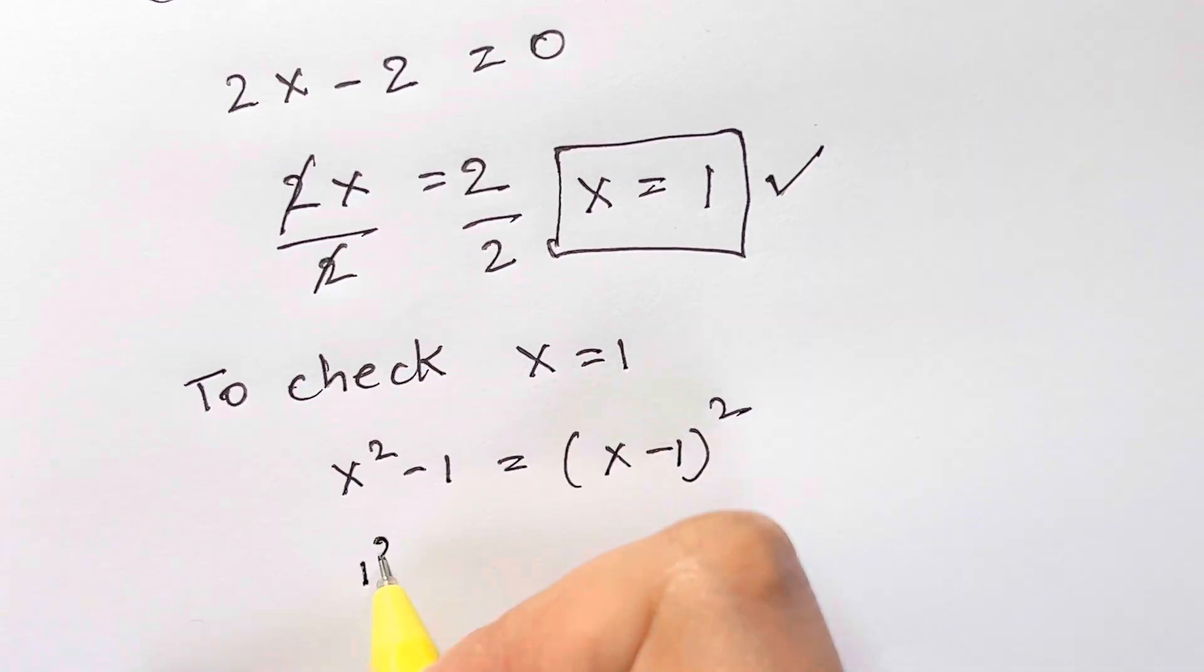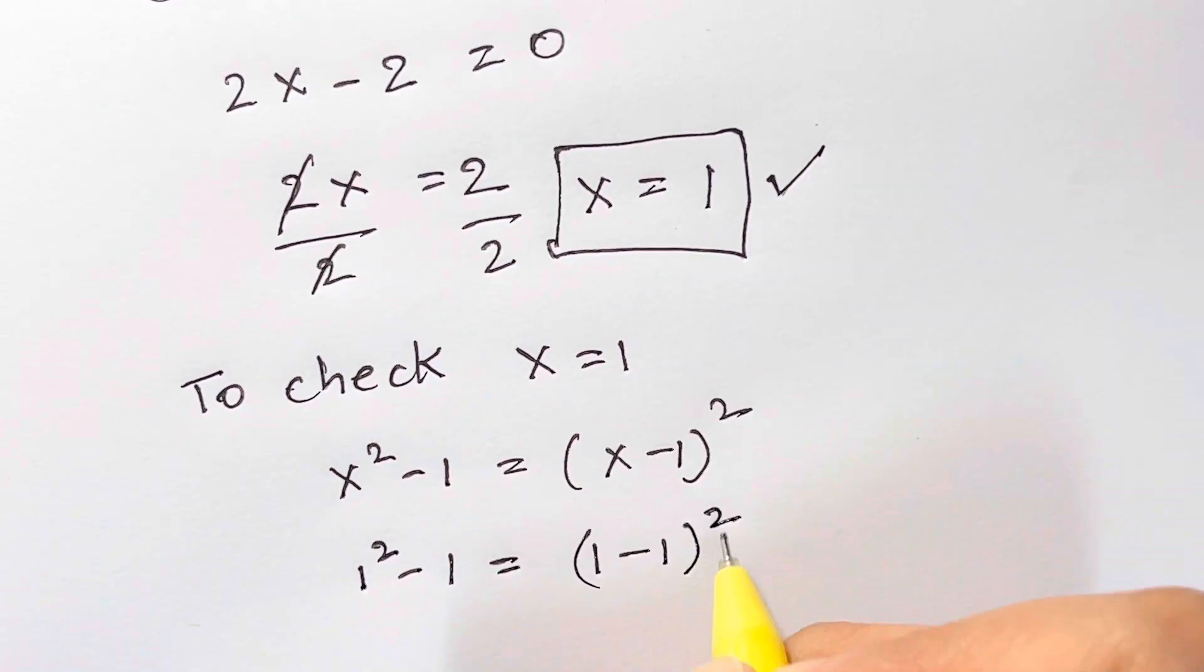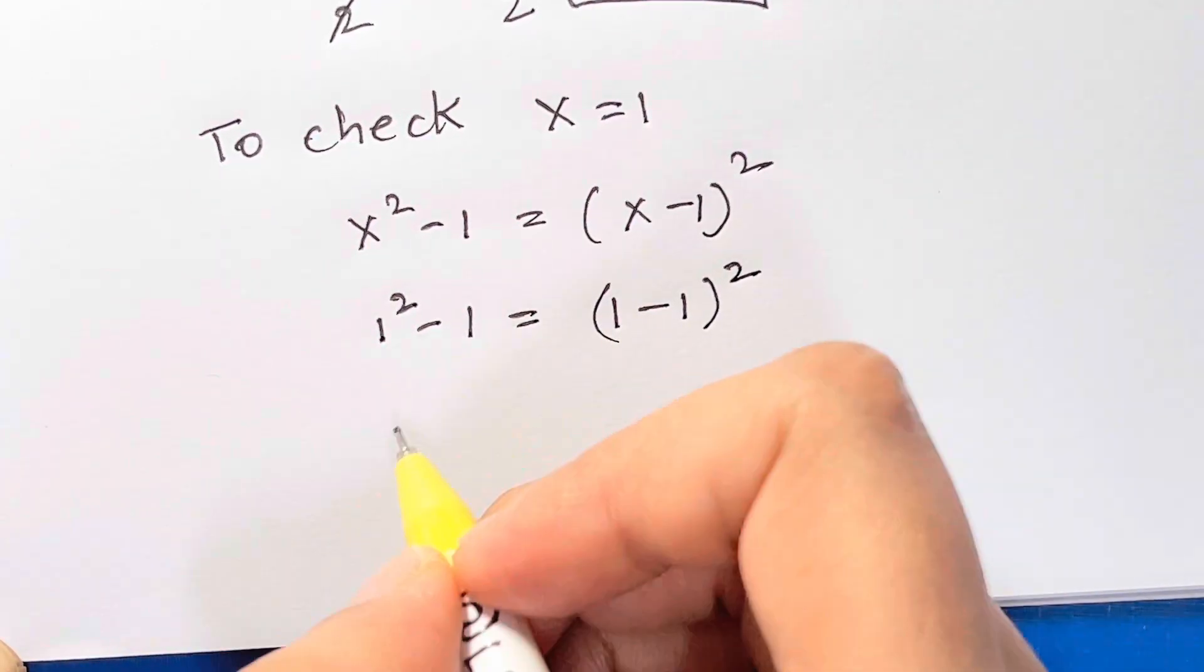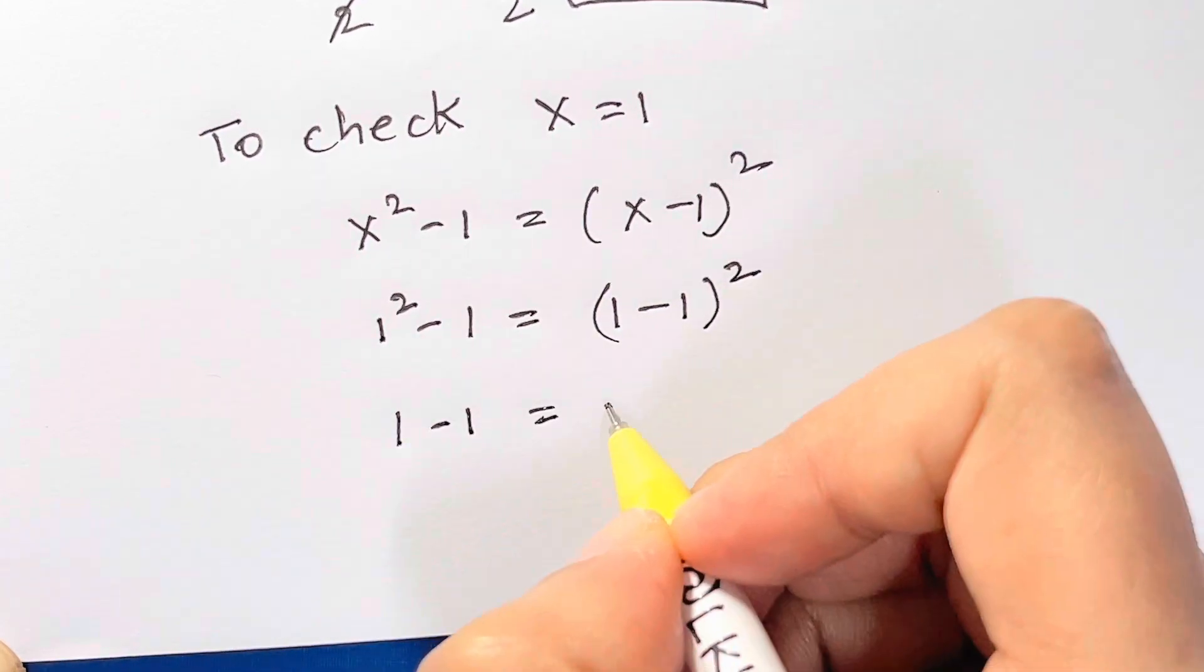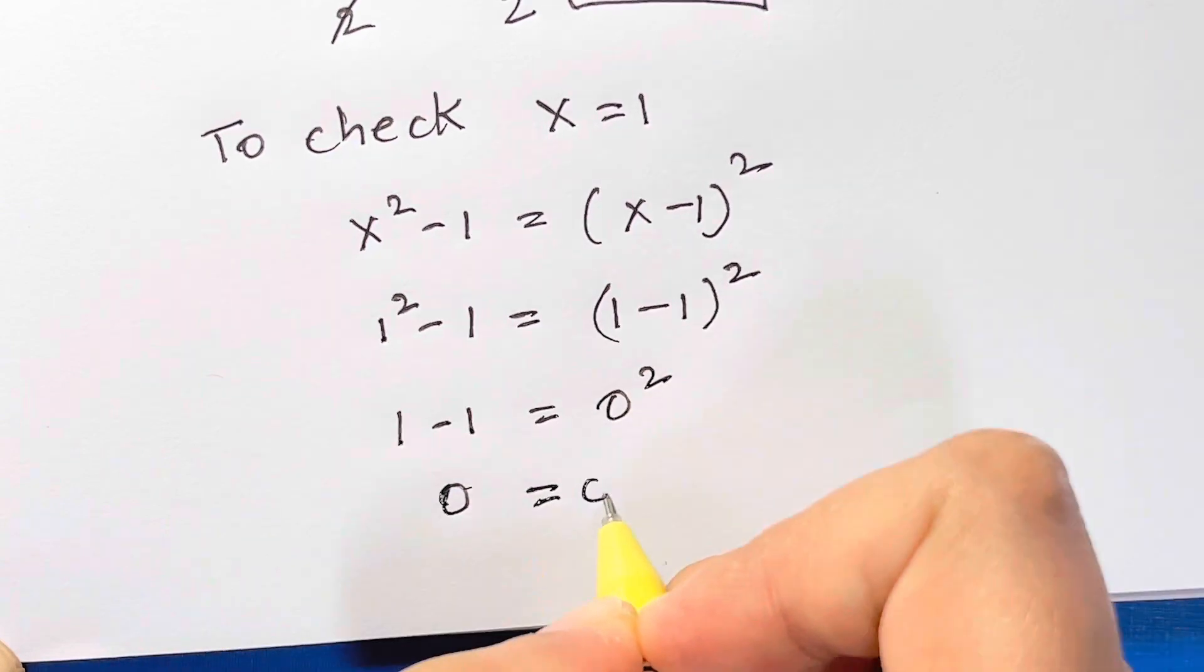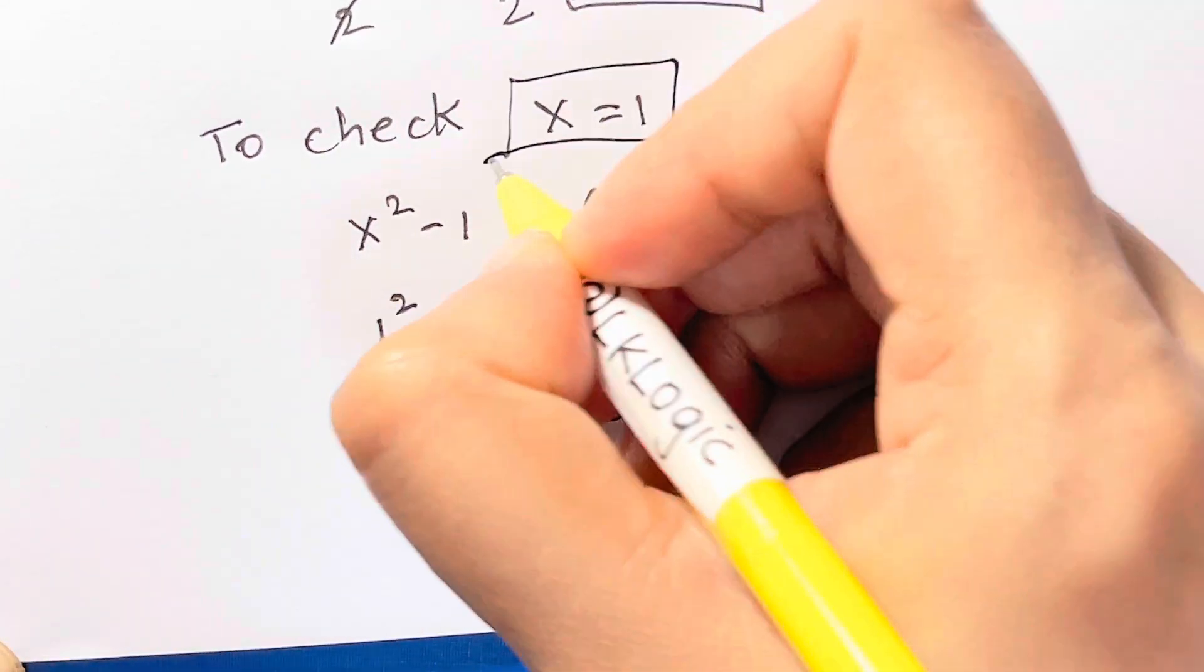So we have 1 squared minus 1 is equal to 1 minus 1 the whole squared. That is, 1 squared is 1. 1 minus 1 is equal to 1 minus 1 is 0 squared. So 1 minus 1 is 0, 0 squared is 0. And that's true for the value of x is equal to 1.